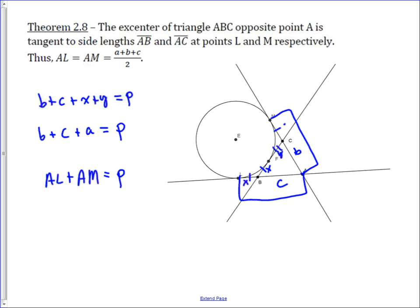A is a point outside the circle, and L and M are the tangent points, so they're equal tangents with the same length. You can substitute AL for AM, giving 2AL equals the perimeter, so AL equals the perimeter over 2, which is the semi-perimeter.